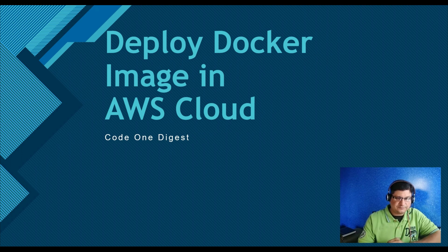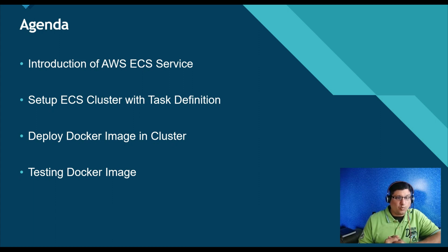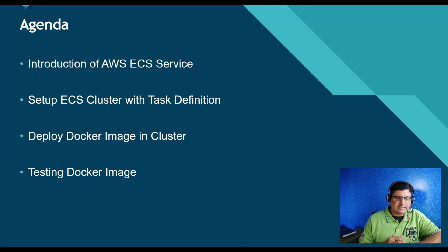The agenda for today: I'll introduce you to the AWS ECS service — what is ECS, Elastic Container Service, why do we use it, what is the purpose of ECS. Then we'll set up an ECS cluster with a task definition — what is a task definition, how can we create a container. Then we'll deploy our Docker image into the cluster using the image from the previous video, and finally we'll test our application running in the cloud.